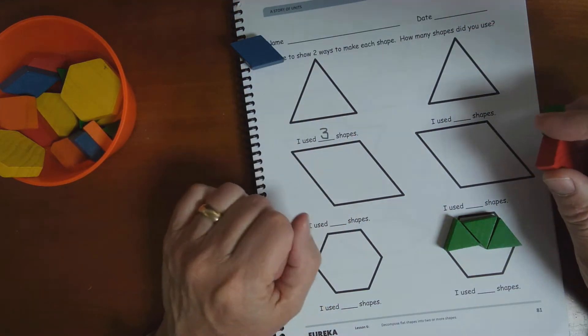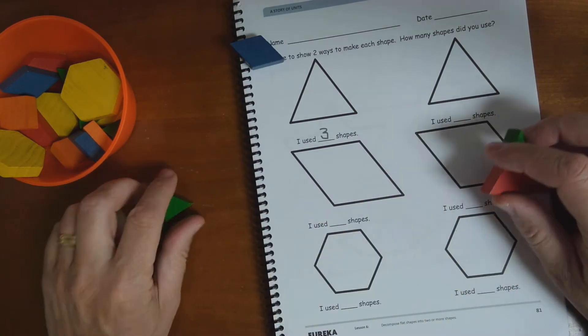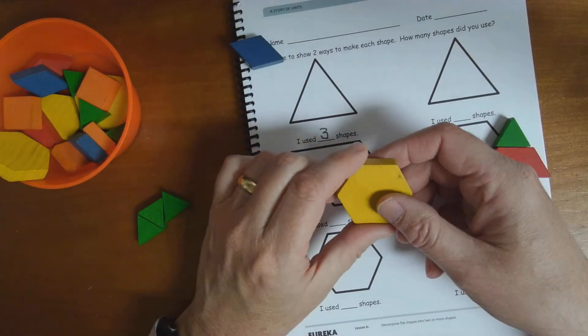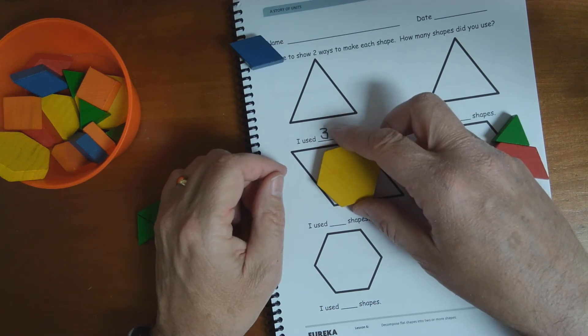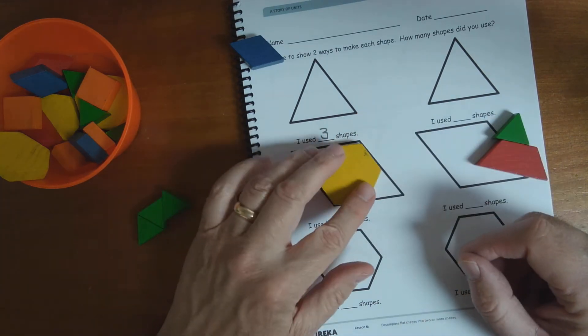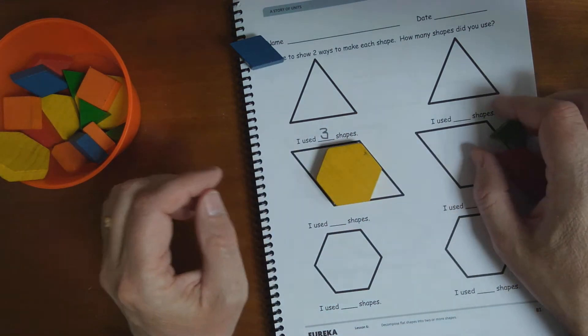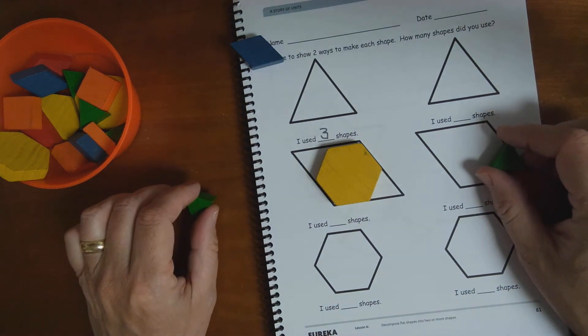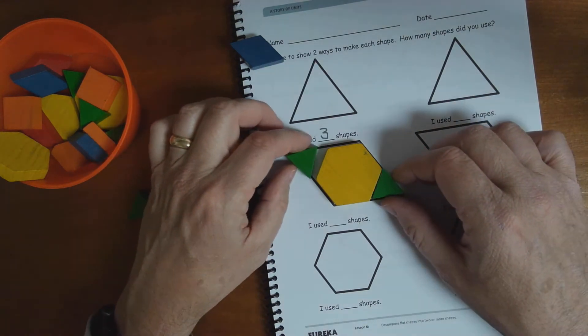Now we've got a trapezoid here. Let's try covering this trapezoid up. I wonder if I can use a big hexagon in this trapezoid. Ooh, that fits pretty good, doesn't it? What more shapes do I need? Two more triangles, don't I? Okay.